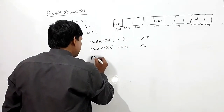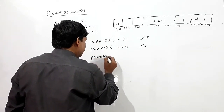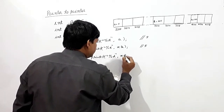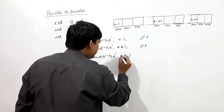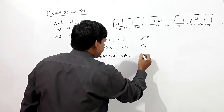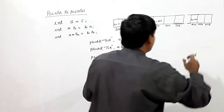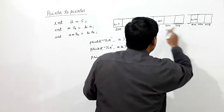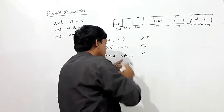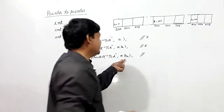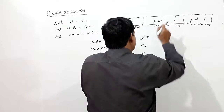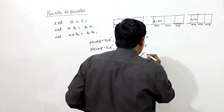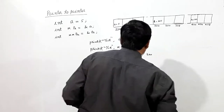If I take printf percent d with *ppa — 'ppa' is 300. We reach address 300, and one indirection operator is applied, so we go into that cell which contains 200. So the output will be 200.